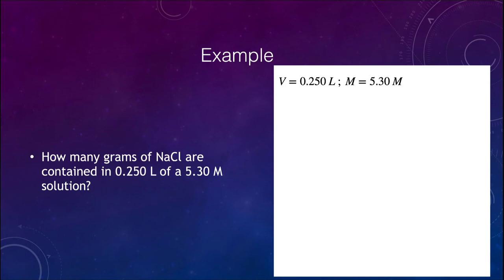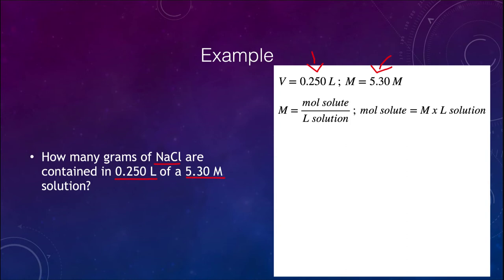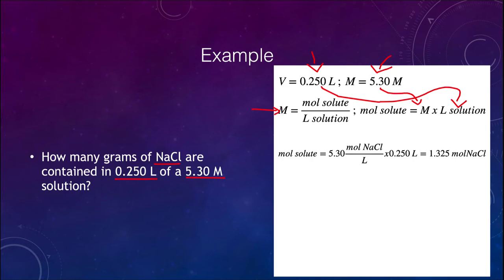Our next example involves finding how many grams of sodium chloride are contained in 0.250 liters of a 5.3 molar solution. We know the volume and the molarity, and we're looking for the grams of sodium chloride. Using the molarity equation rearranged, moles of solute equals molarity times volume: 5.3 multiplied by 0.25, giving us 1.325 moles of sodium chloride. However, we're not done — we want to find out how many grams that is.